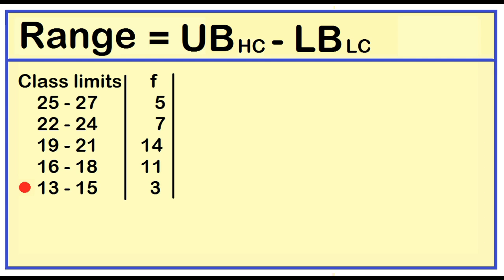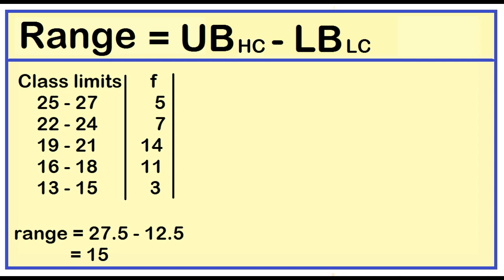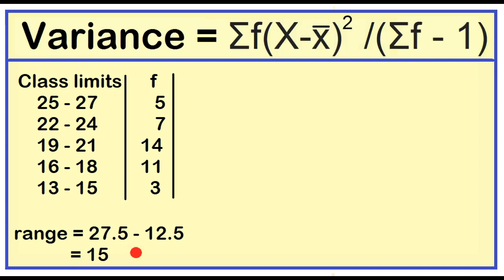The lowest class is 13 to 15. To find the lower boundary, just subtract 0.5 from the lower limit. 13 minus 0.5 is 12.5. The range is 27.5 minus 12.5, which is equal to 15.